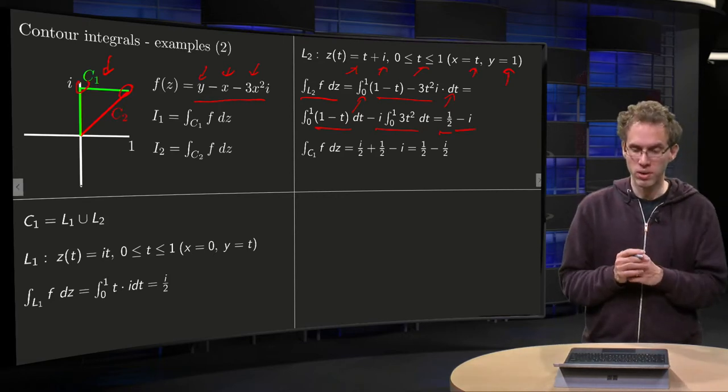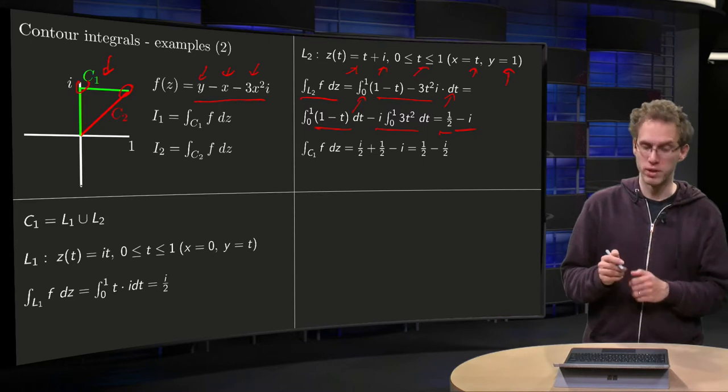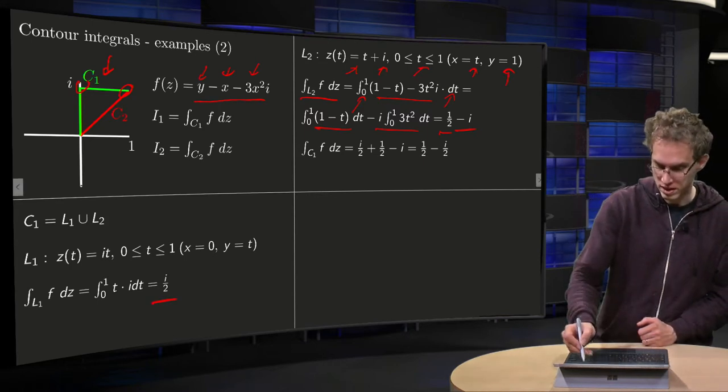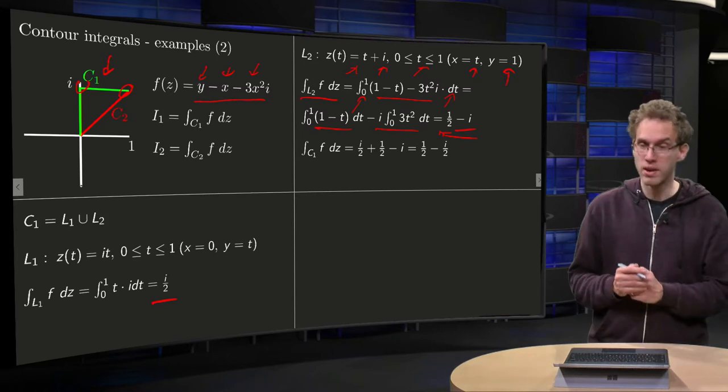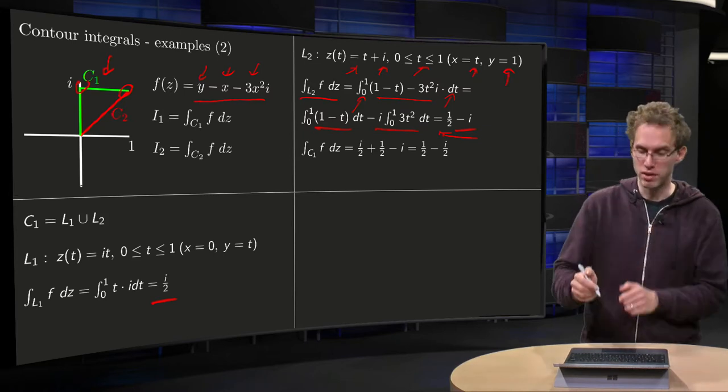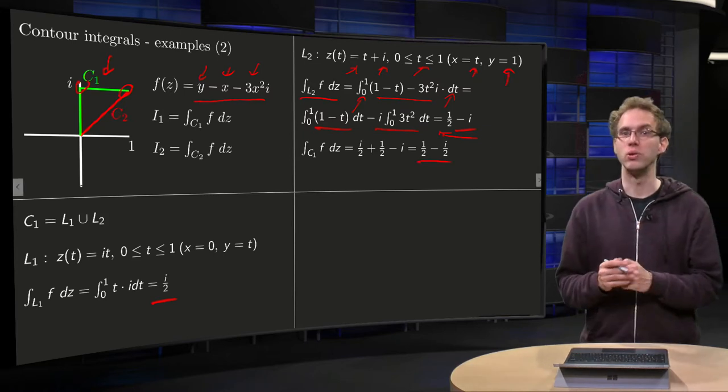So the integral, total integral along C1, is the contribution of the first part and the second part, so you get one-half minus i plus i over 2, so one-half minus i over 2. So there you go.